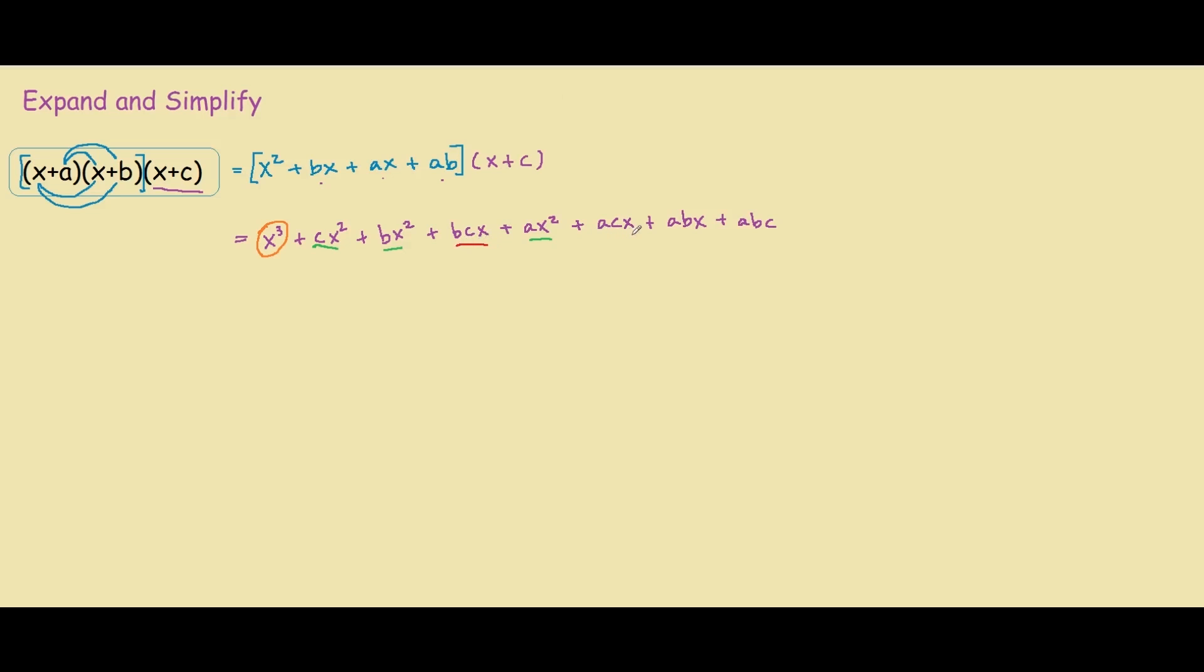And lastly, we have our constant, or we can think of it as x to the power of 0. This x to the power of 0 is also equal to 1, so we have only one term for our constant.